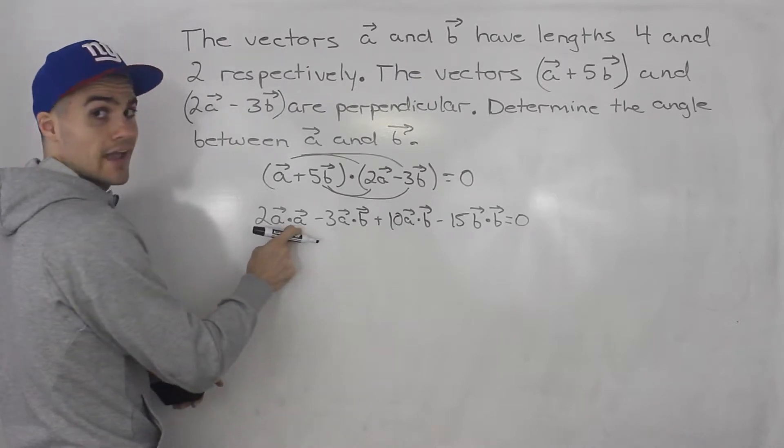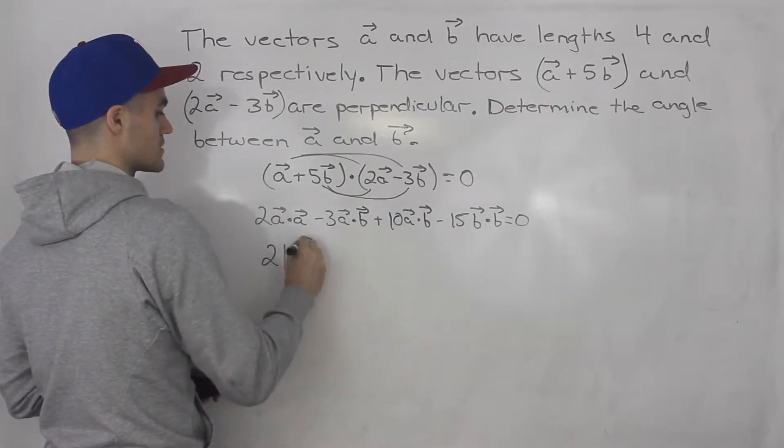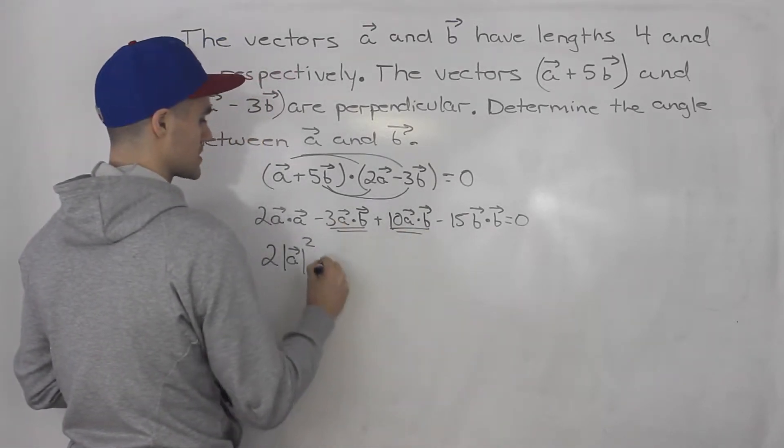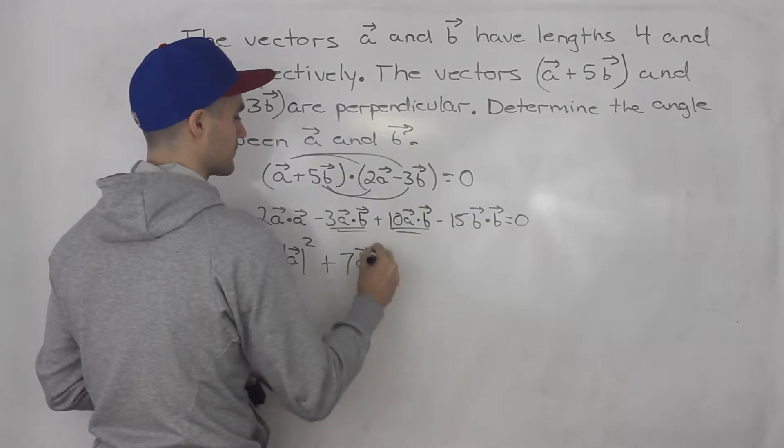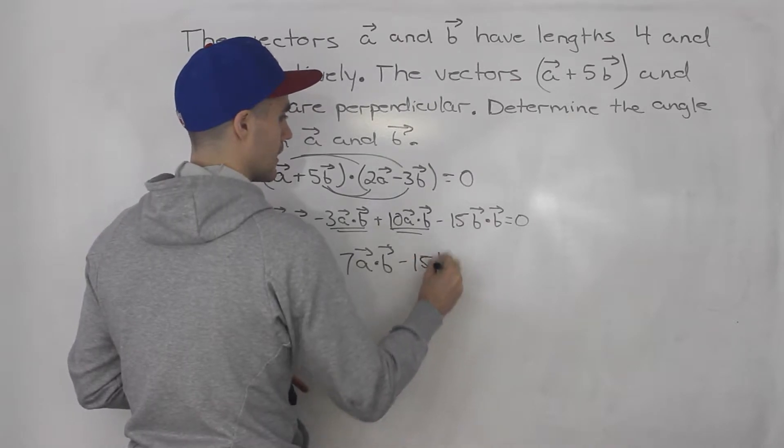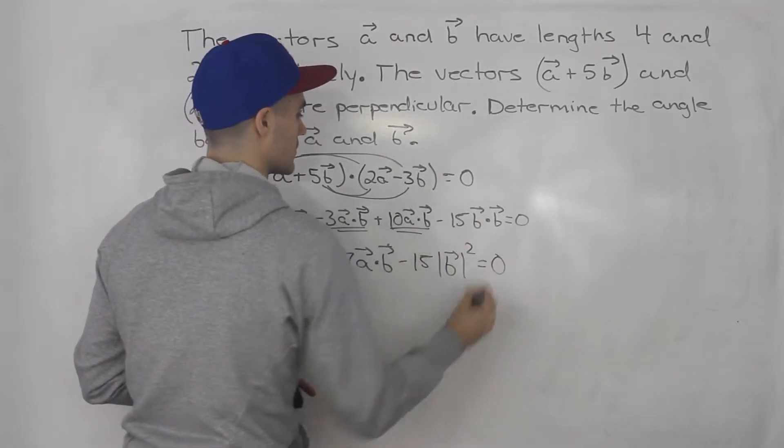Now a·a, we know that that is 2 magnitude of a squared. These two here are like terms. Negative 3 plus 10 is 7. That's going to be a·b. And then -15 and then b·b is the magnitude of b squared. This is all equaling 0.